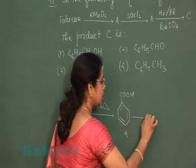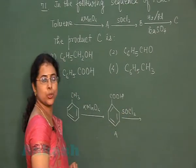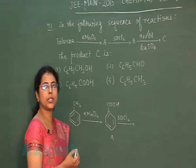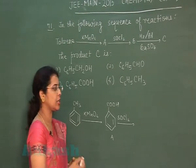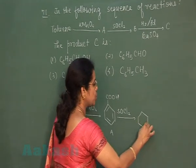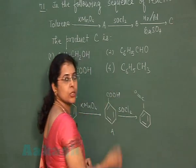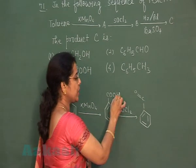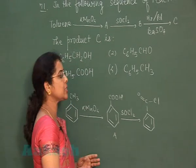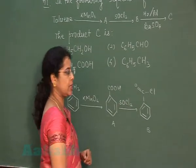When benzoic acid is treated with SOCl2 — thionyl chloride — thionyl chloride is a chlorinating agent. It replaces the OH of the carboxylic acid group with chlorine. So the product obtained is benzoyl chloride. This is product B.